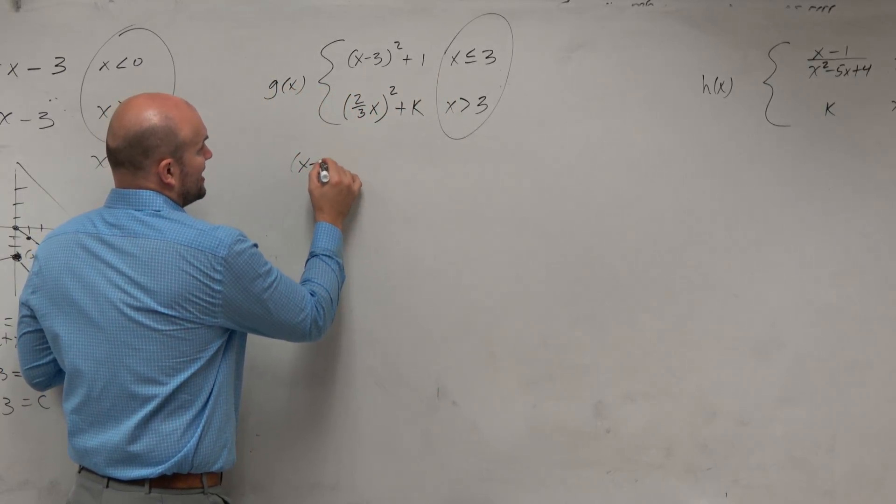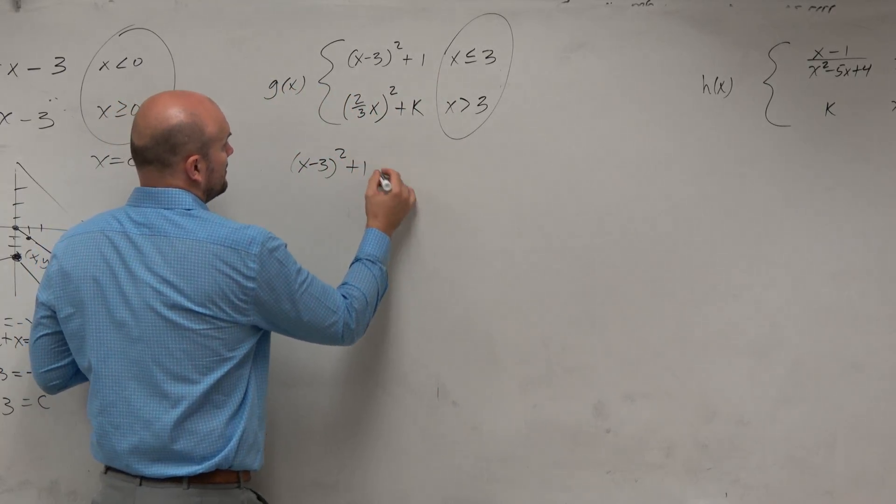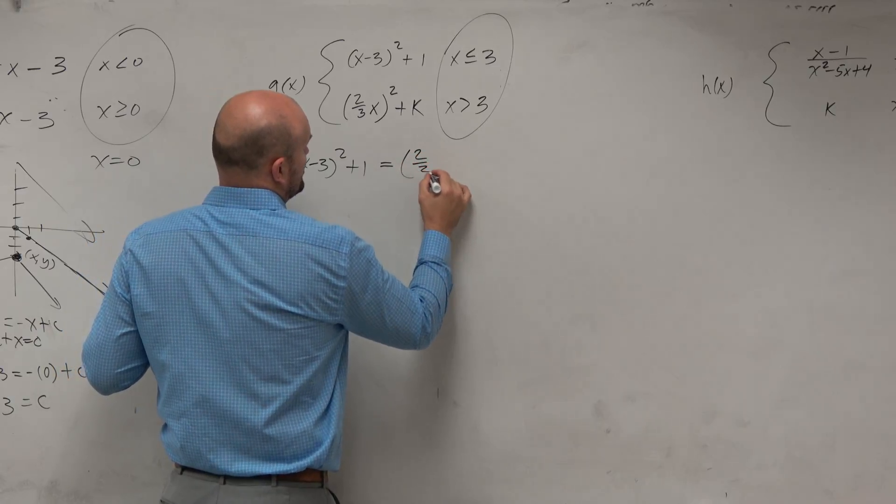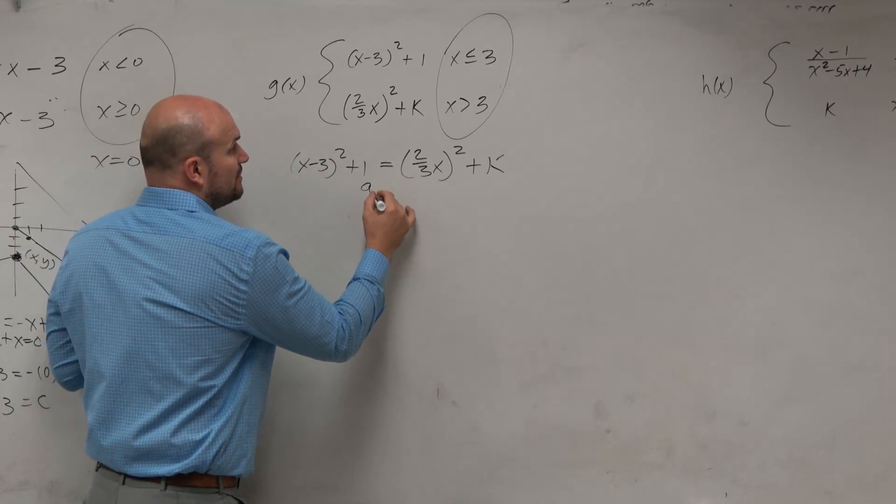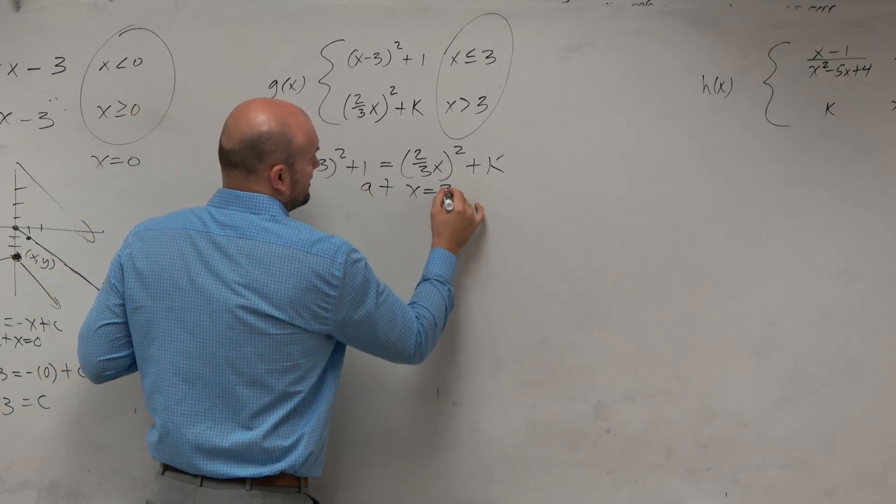So we're going to set them equal to each other. x minus 3 squared plus 1 is equal to 2 thirds x squared plus k. And we want to determine when they're equal at x equals 3.